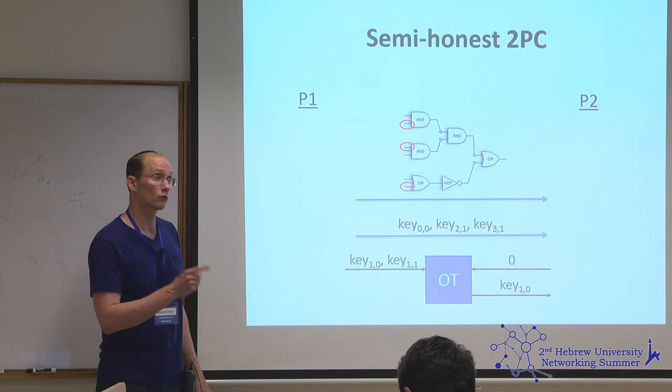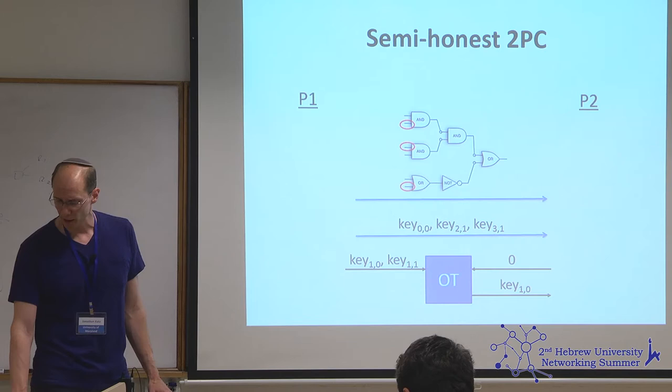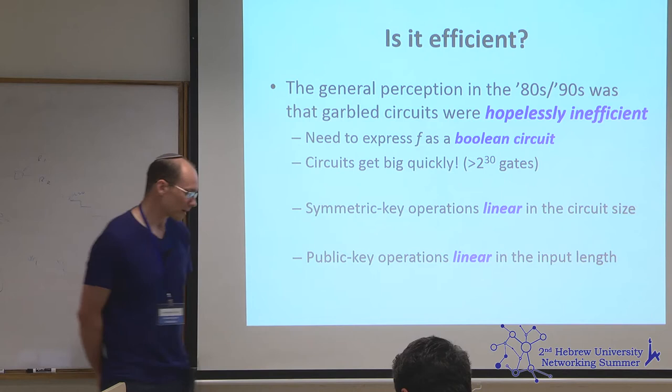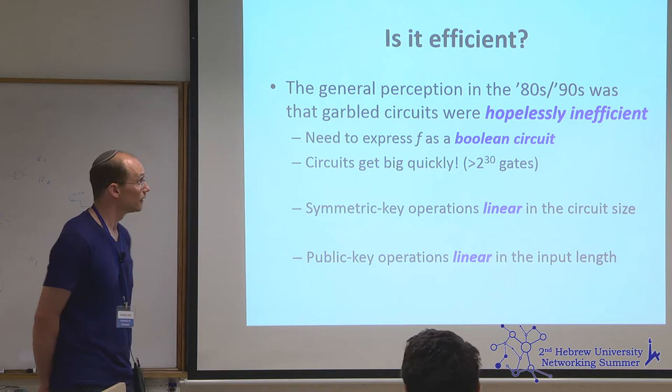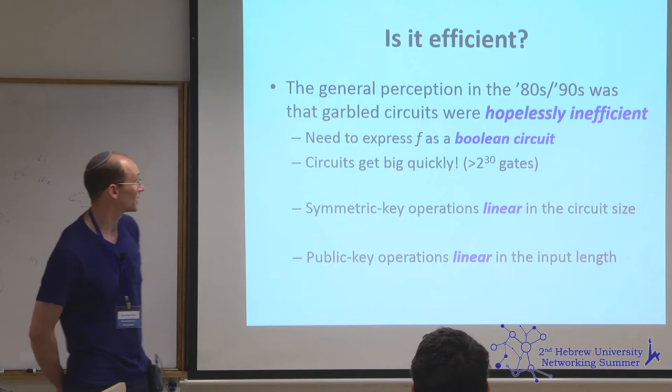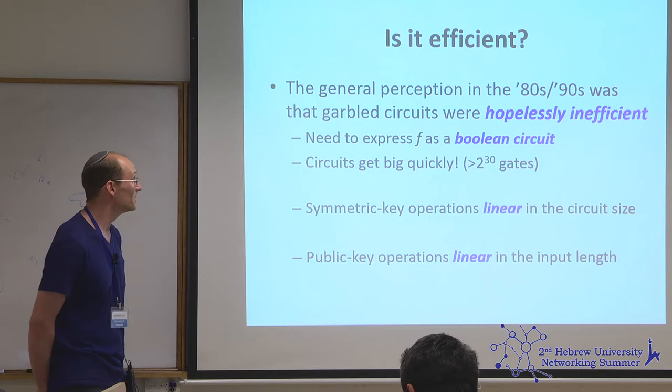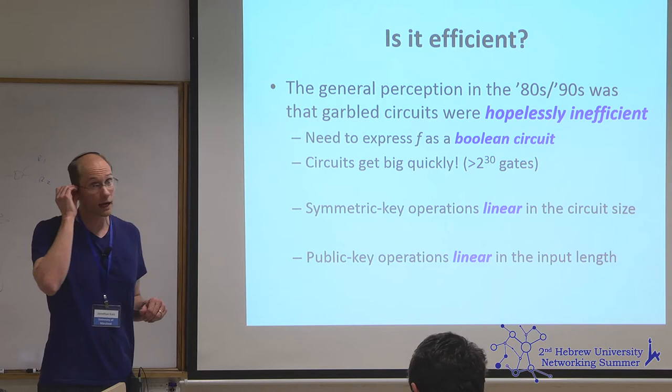The question of efficiency is interesting. The general perception in the 80s and 90s was that garbled circuits were never going to be practical. Why? First, you have the problem of expressing your function f as a boolean circuit. In principle every function can be expressed this way, but a five-line C program can unroll to a hundred-thousand-gate circuit — think of a loop 'for i=1 to 100': that's depth 100 plus the logic for the addition.